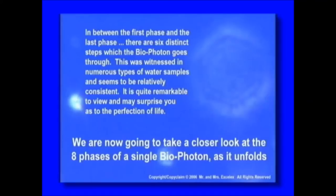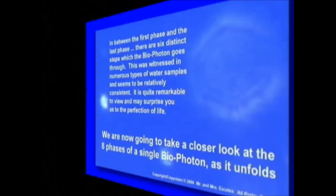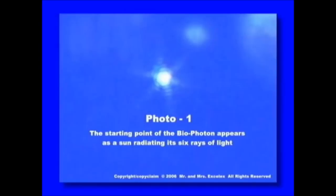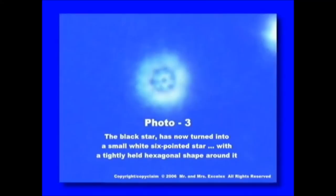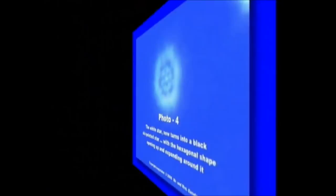We are now going to take a closer look at the eight phases of a single biophoton as it unfolds. Image 1: the starting point of the biophoton - it appears as a sun radiating its six rays of light. Image 2: the sun starts to open up, showing a black six-pointed star in its center. Image 3: the black star has now turned into a small white six-pointed star, with a tightly held hexagonal shape around it. Image 4: the white star now turns into a black six-pointed star, with a hexagonal shape opening up and expanding around it.